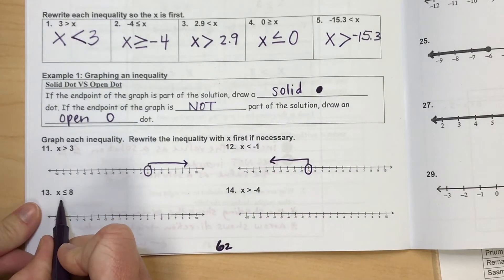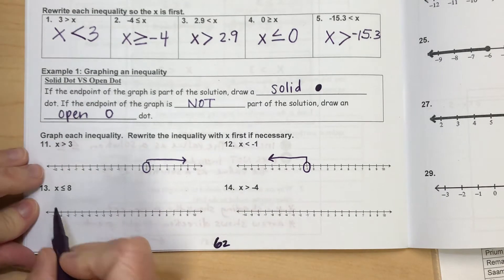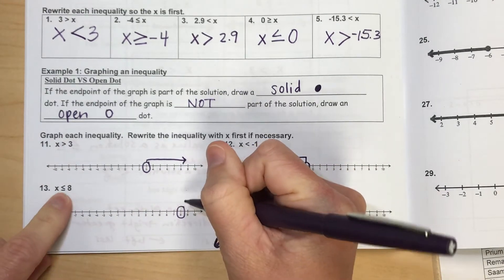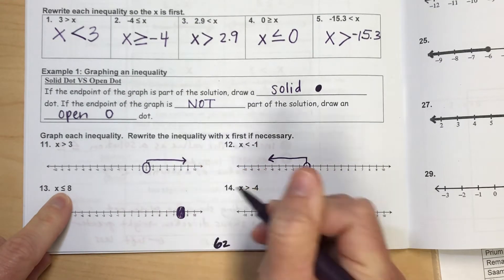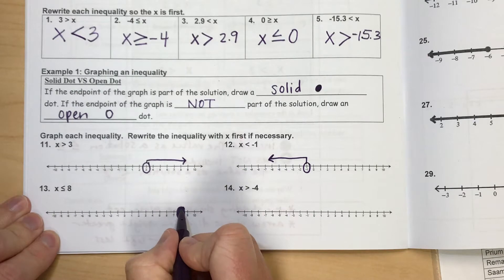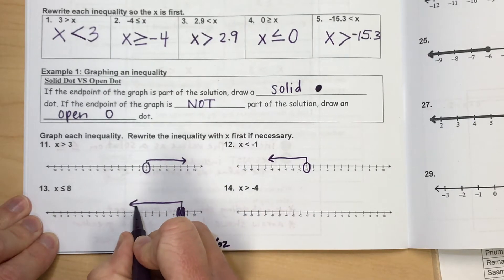For x is less than or equal to 8, I'm going to find on my number line the number 8. But this time, because it says equal, I'm going to shade that in. And now what I'm going to do is shade less than, because it says less, so we're going to go shading towards the left.